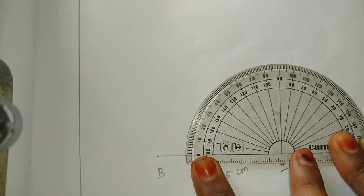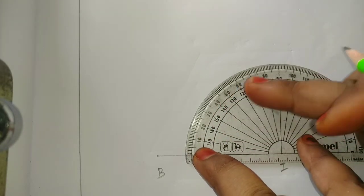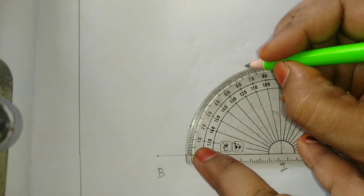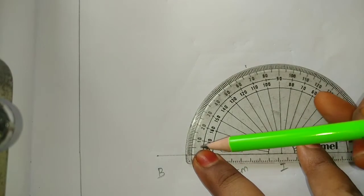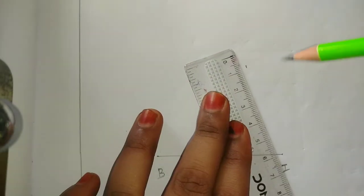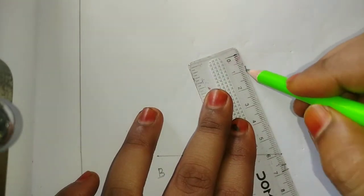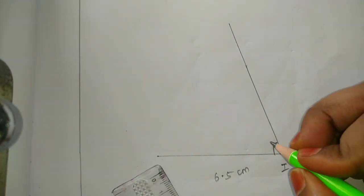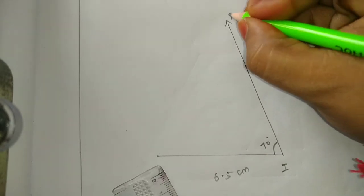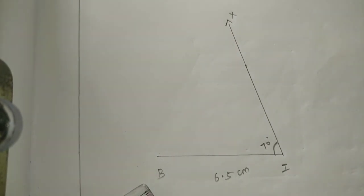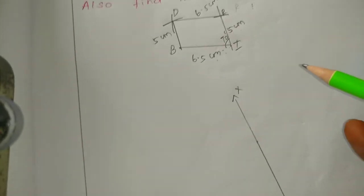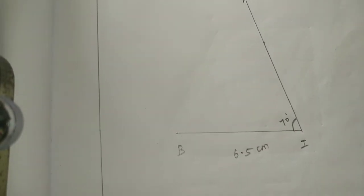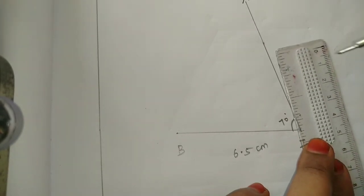Count from 0: 10, 20, 30, 40, 50, 60, 70. Mark 70 degrees, draw the line from inside to outside. This line joins at 70 degrees. Clear? Next, on this line, mark IR = 5 cm from I.